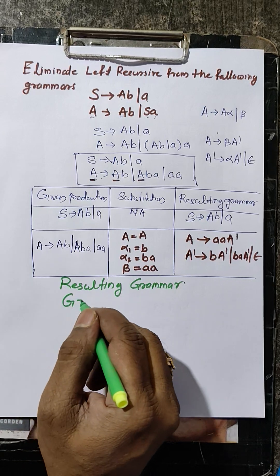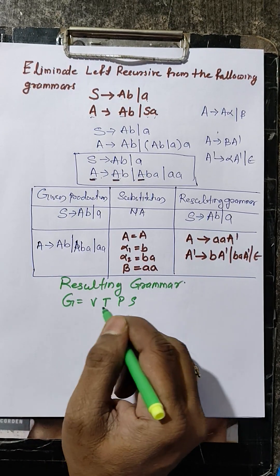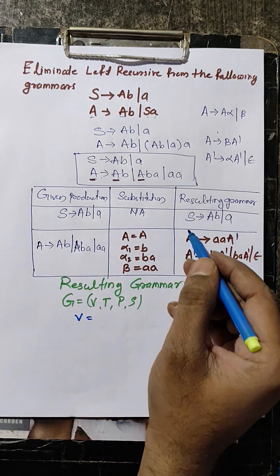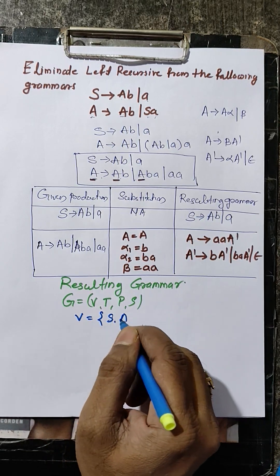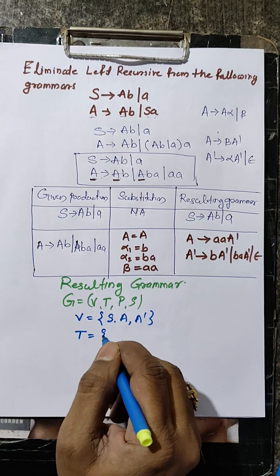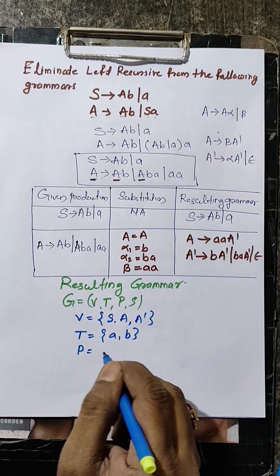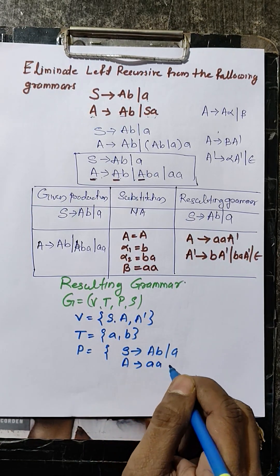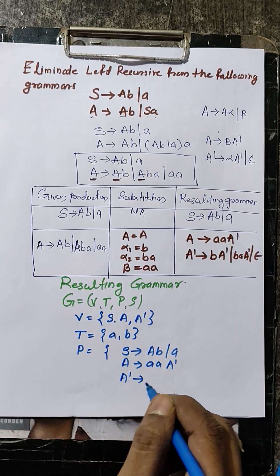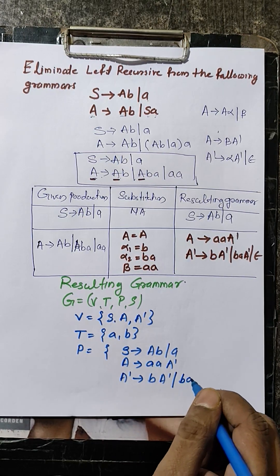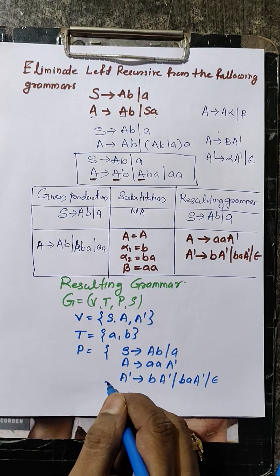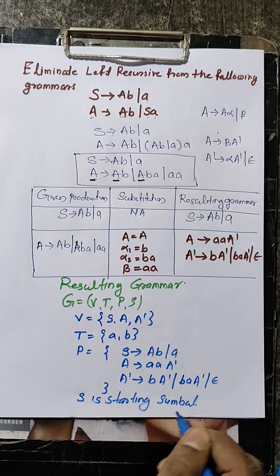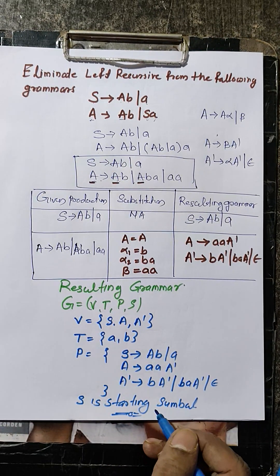Resulting grammar: G equals (V, T, P, S). Variables V equals {S, A, A'}. Terminals T equals {a, b}. Productions P: S produces a, b or a. Then A produces a, A' and A' produces b, A' or b, a, A' or epsilon. S is the starting symbol. This is the grammar after eliminating left recursion.